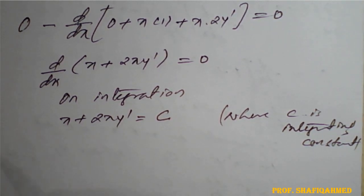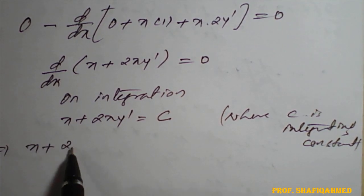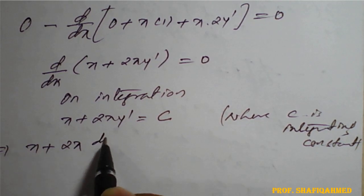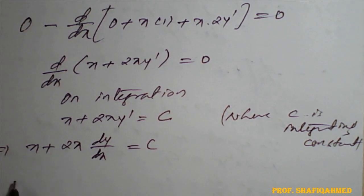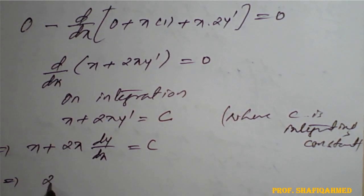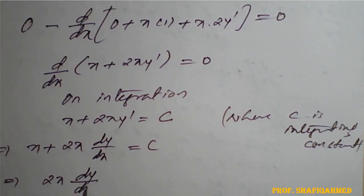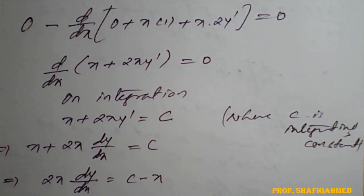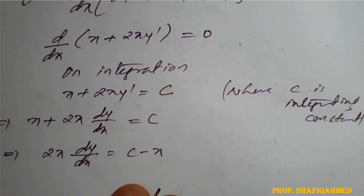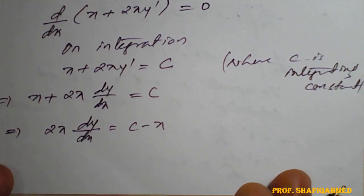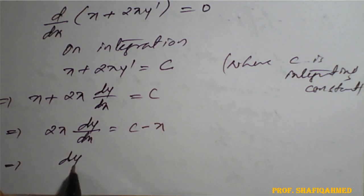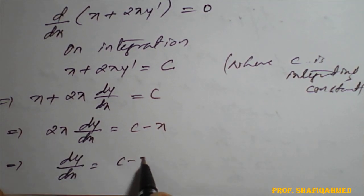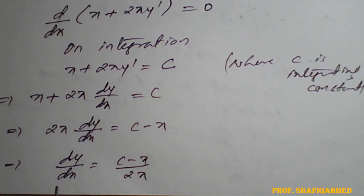Again, x and 2x we need to shift to the other side — we need only a y value. So x as it is, 2 times x y dash can be written as dy by dx. So 2x dy by dx equals c minus x. Shifting 2x to the right hand side, dy by dx equals (c minus x) divided by 2x. We will integrate again.